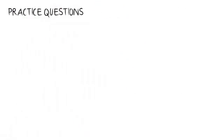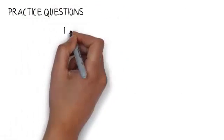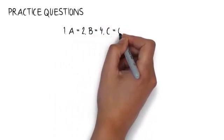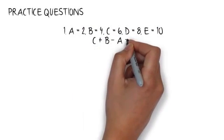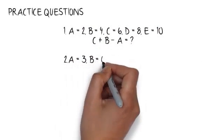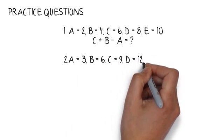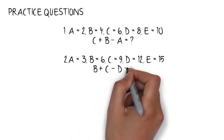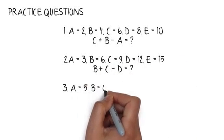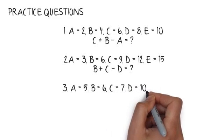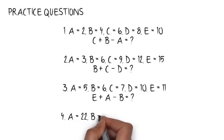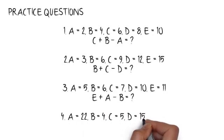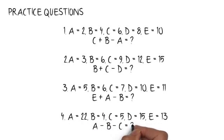Practice question 1: a equals 2, b equals 4, c equals 6, d equals 8, e equals 10. c plus b minus a equals? Practice question 2: a equals 3, b equals 6, c equals 9, d equals 12, e equals 15. b plus c minus d equals?